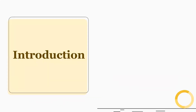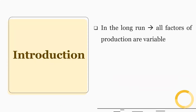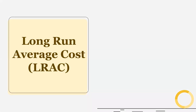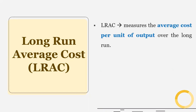Let's begin with the introduction. We know that in the long run, all factors of production are variable. Therefore, there is no distinction between total variable cost and total cost in the long run, because we do not have fixed cost. Now, what is long-run average cost? The long-run average cost measures the average cost per unit of output over the long run.